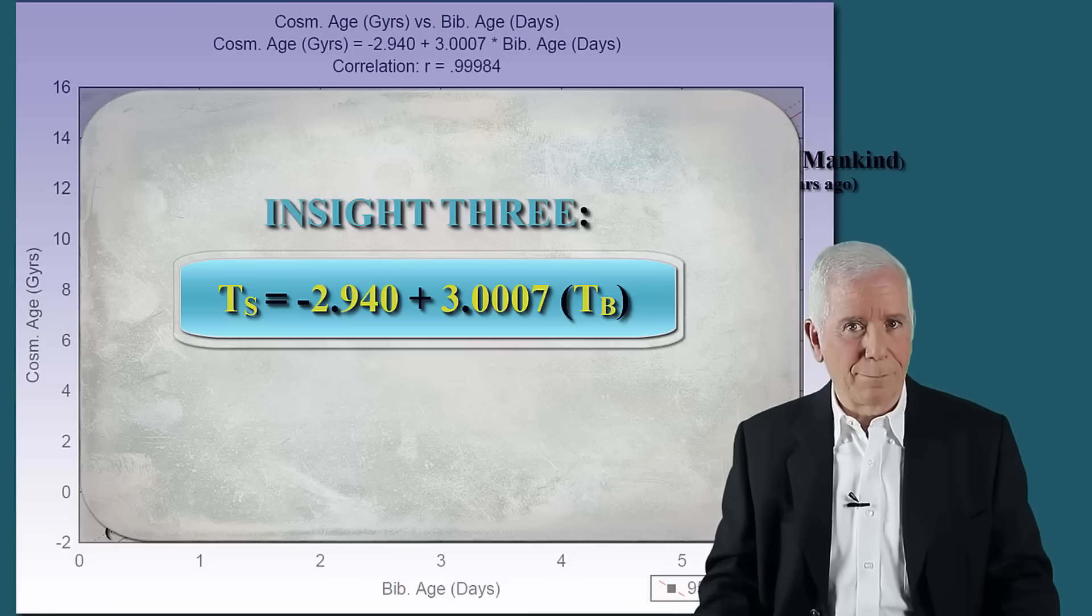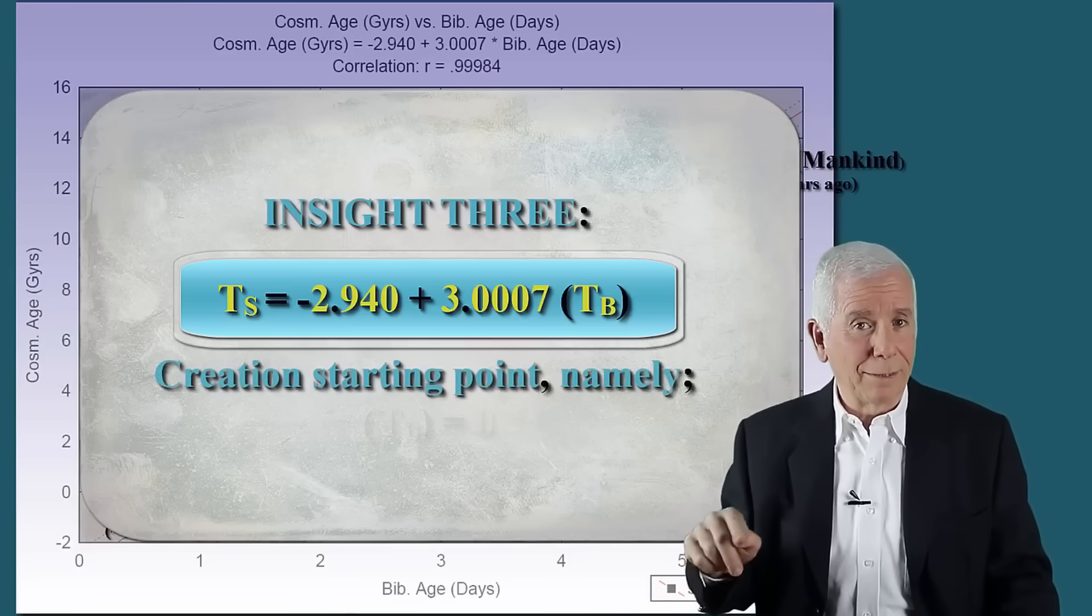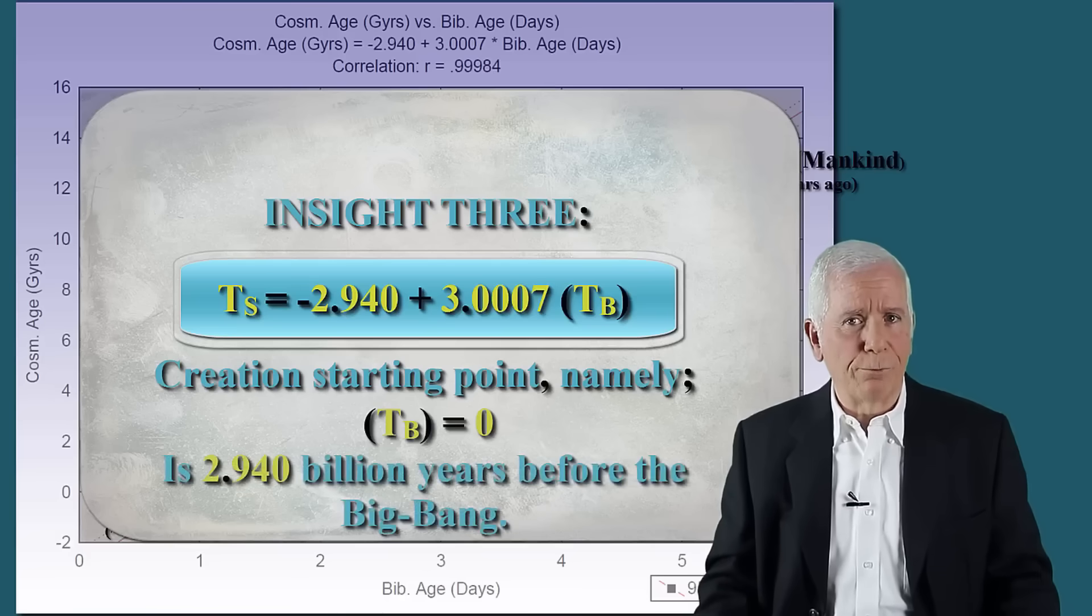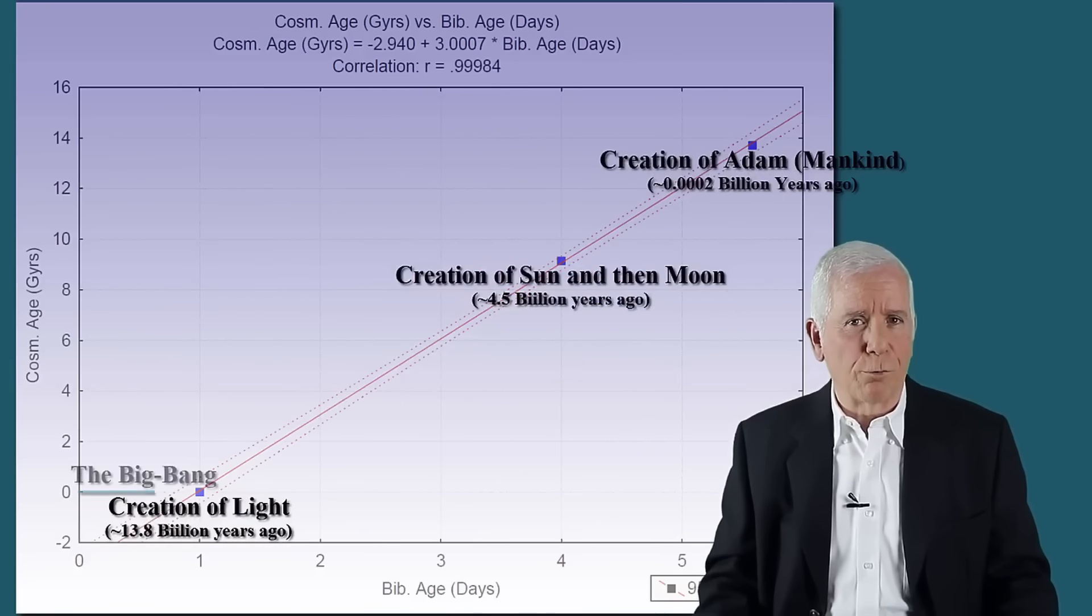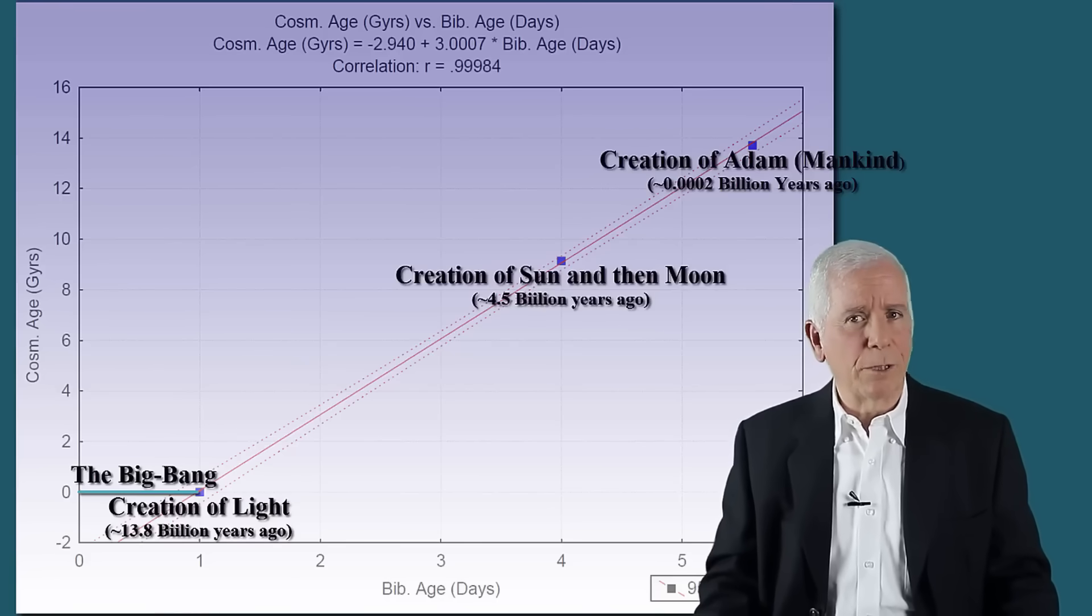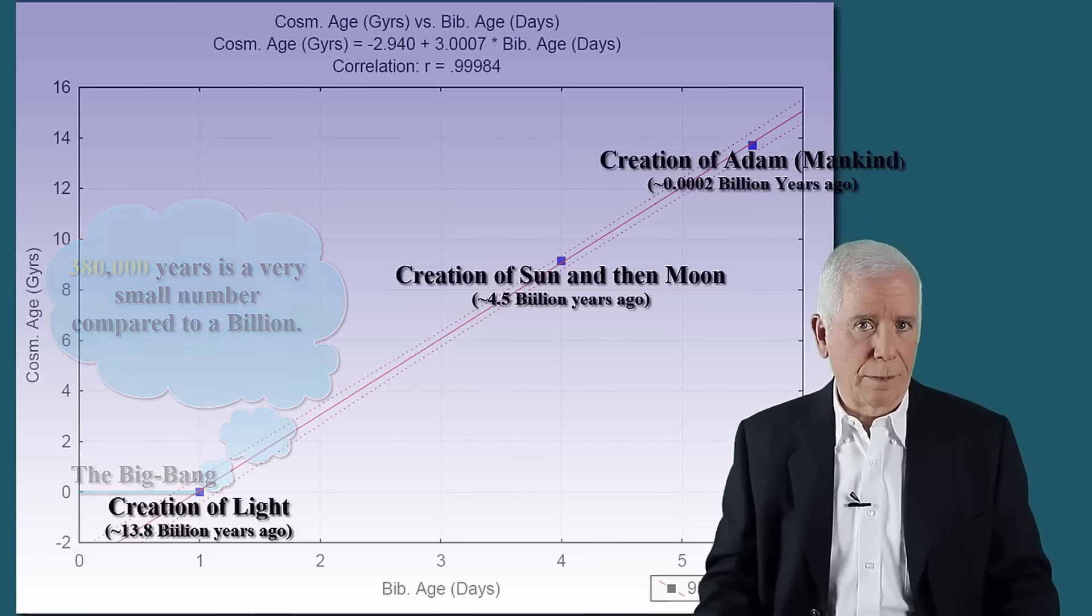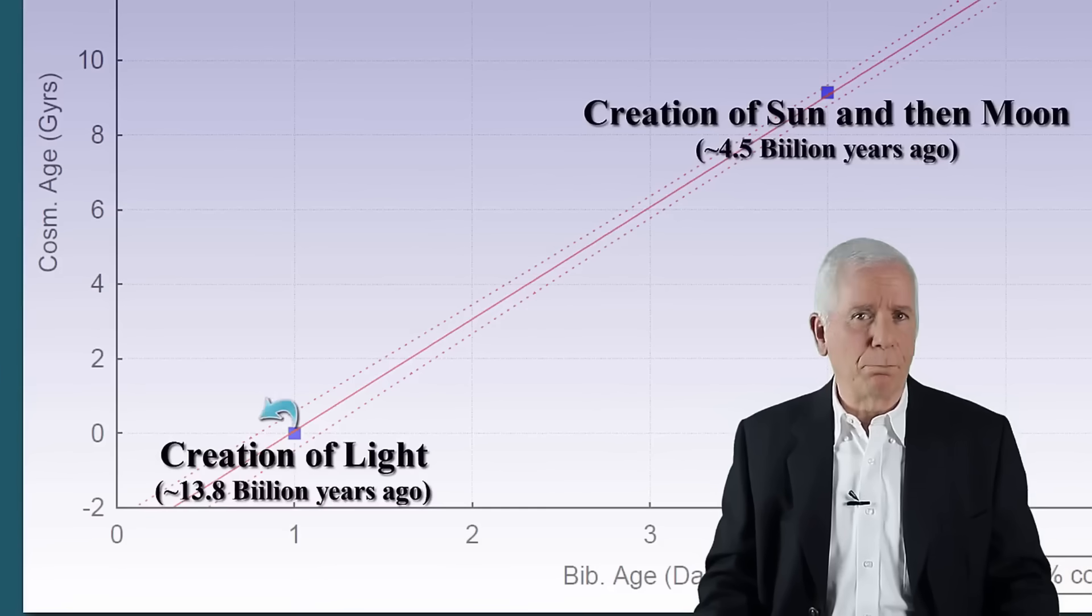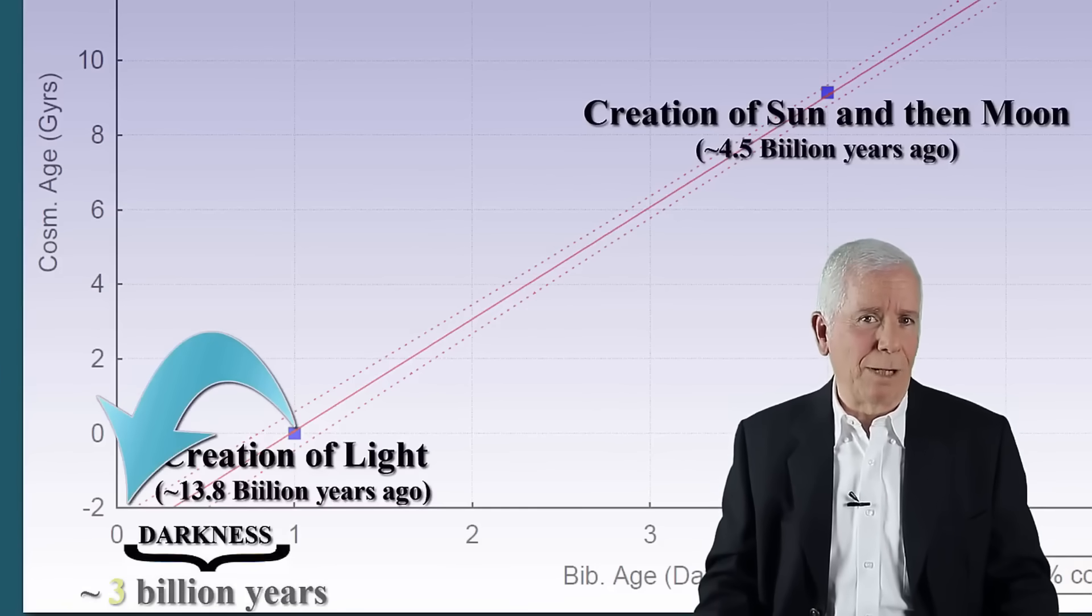Insight three. The equation shows that creation starting point, namely TB equals zero, is 2.940 billion years before the Big Bang. That is, before creation of light, which, according to modern science, occurred immediately after the Big Bang, more precisely, 380,000 years after the Big Bang. The statistical model predicts that before creation of light, there was a period of darkness that lasted about 3 billion years.